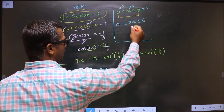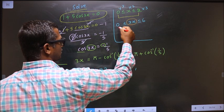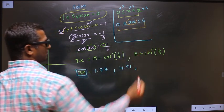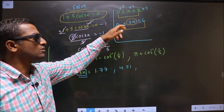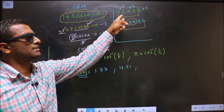So now the values for 3x should lie in this interval. When this happens then automatically the values for x will lie in this interval.